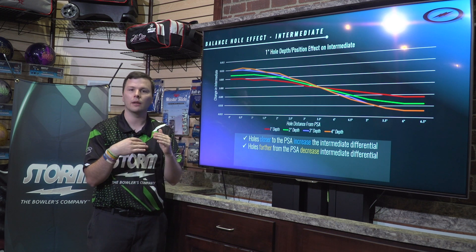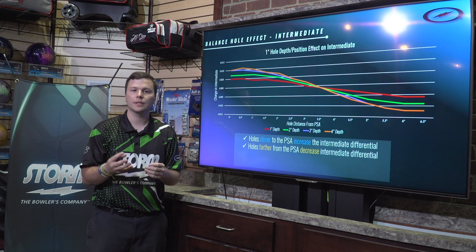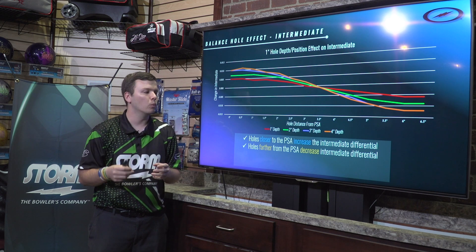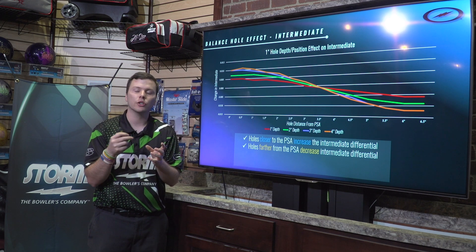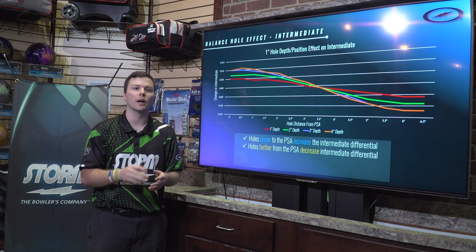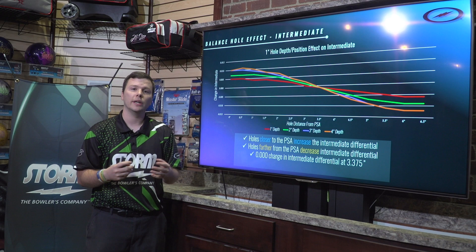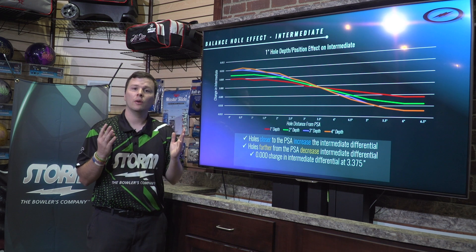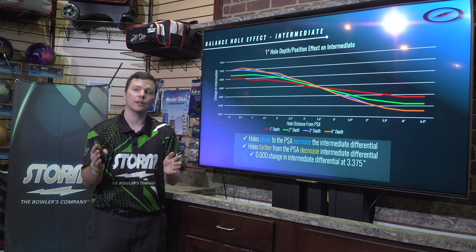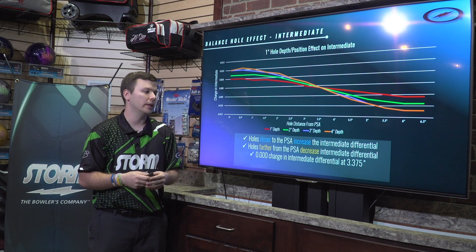Once we get really far away on the right side of the graph and we start decreasing intermediate, we're bringing the axes closer together. If you envision what that looks like on an asymmetrical bowling ball, that would be cutting the weight block through the wider side as opposed to the thinner side — you're actually making it a more symmetrical weight block. It's going to be smoother overall as it transitions down the lane.